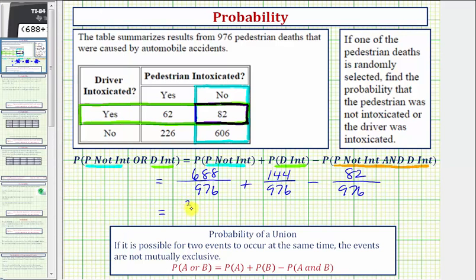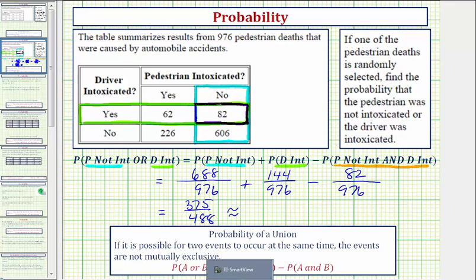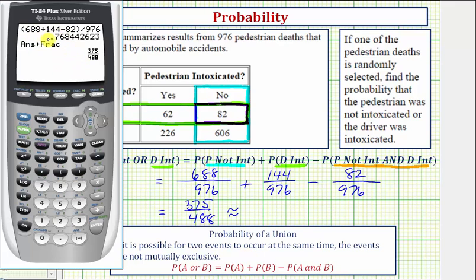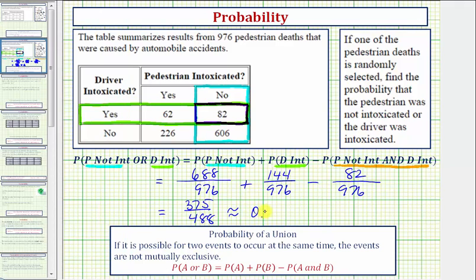But the directions ask us to enter a percentage rounded to one decimal place. So we'll first convert this to a decimal. Because we want the percent to be to one decimal place, we'll have to round the decimal to three decimal places. Going back to the calculator, this would be approximately 0.768. Converting to a percentage, we multiply by 100 and add a percent sign. Move the decimal point to the right two places, giving us approximately 76.8%.